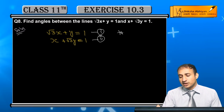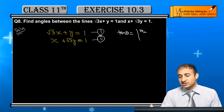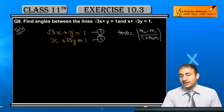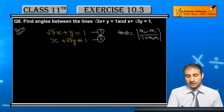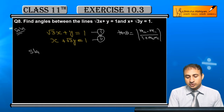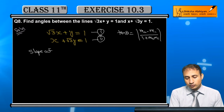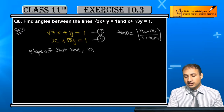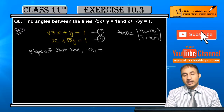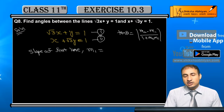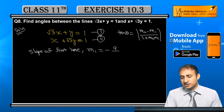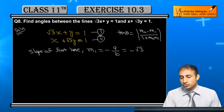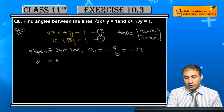The formula is: tan theta equals m2 minus m1 upon 1 plus m2 times m1, where theta is the angle between the lines. For the first line, the slope m1 is found using minus a by b, which gives minus root 3 upon 1.